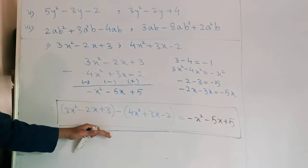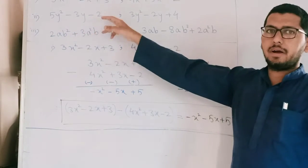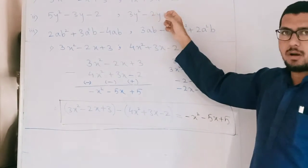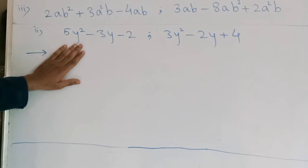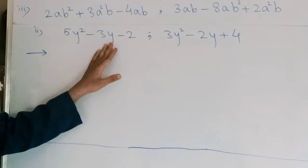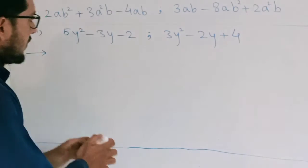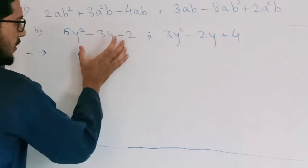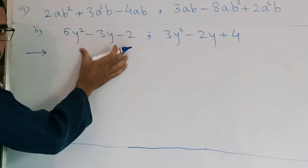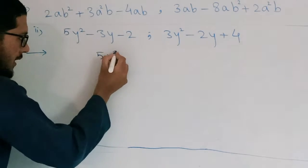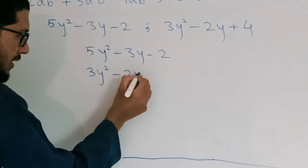Now we come to the second example: 5y² minus 3y minus 2, and 3y² minus 2y plus 4. We have to subtract these two polynomials. First we write the first polynomial: 5y² minus 3y minus 2. The second polynomial is: 3y² minus 2y plus 4.